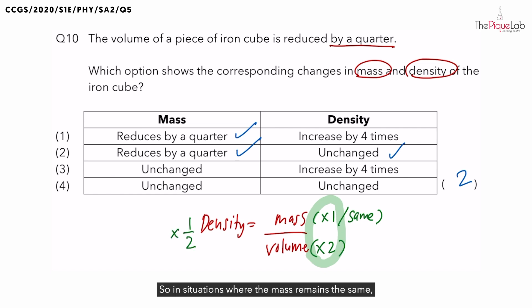So in situations where the mass remains the same, density and volume have an inverse relationship with one another. If volume increases, then density decreases.